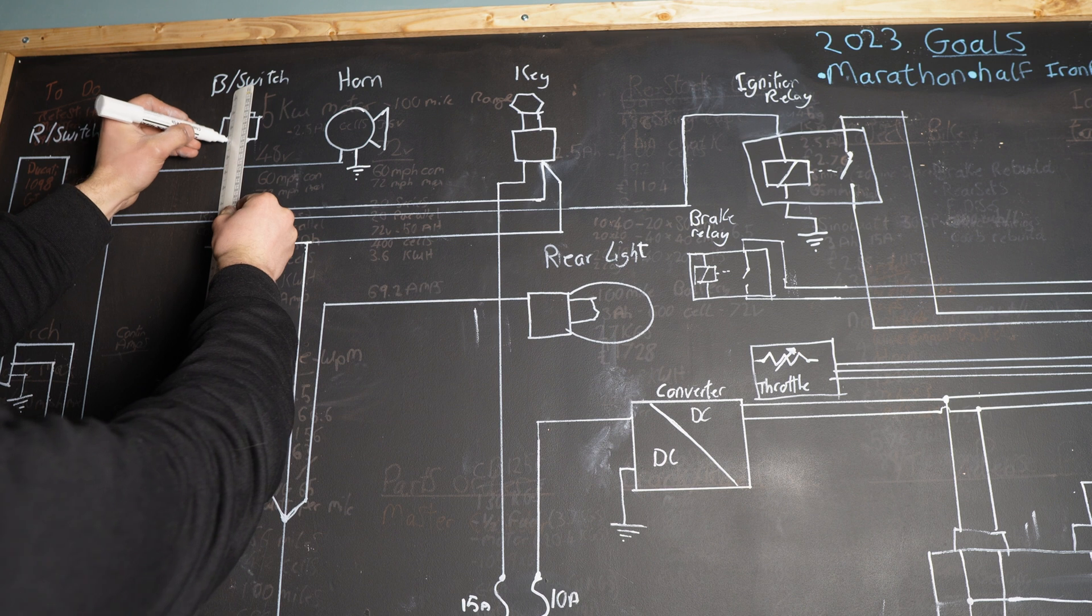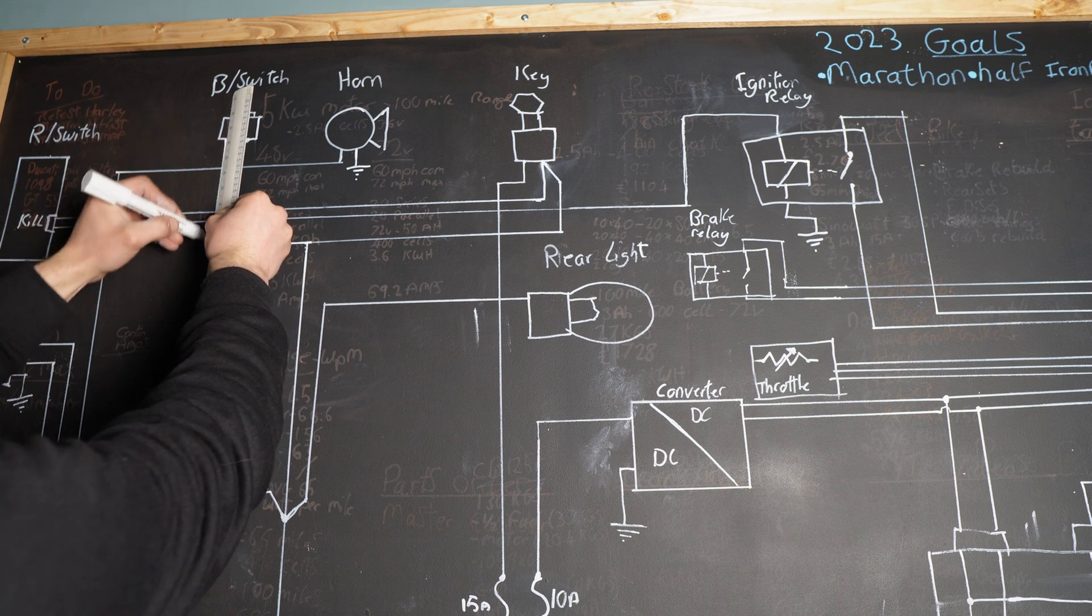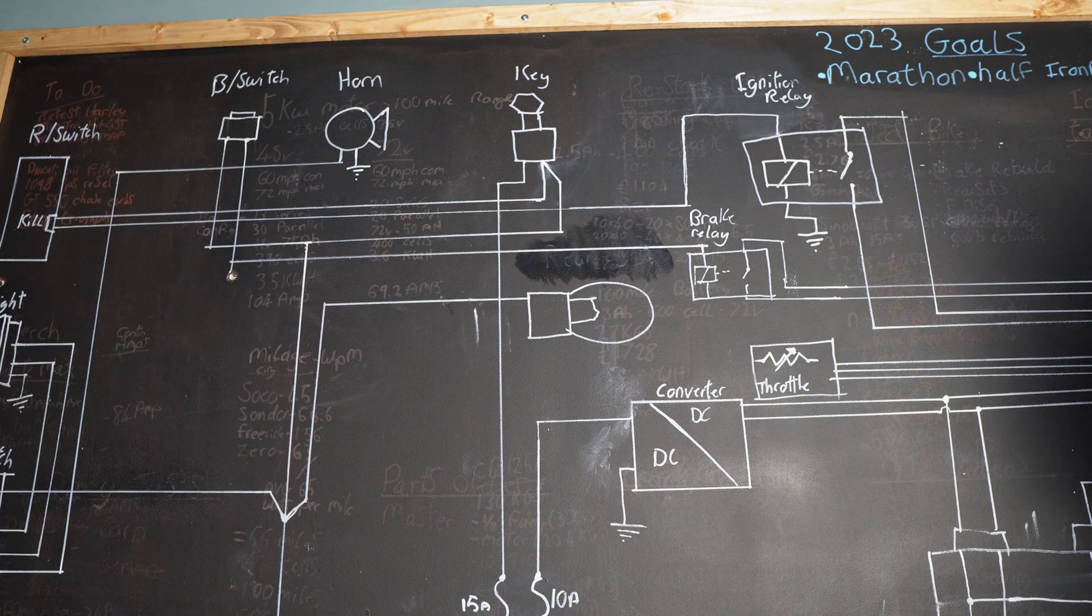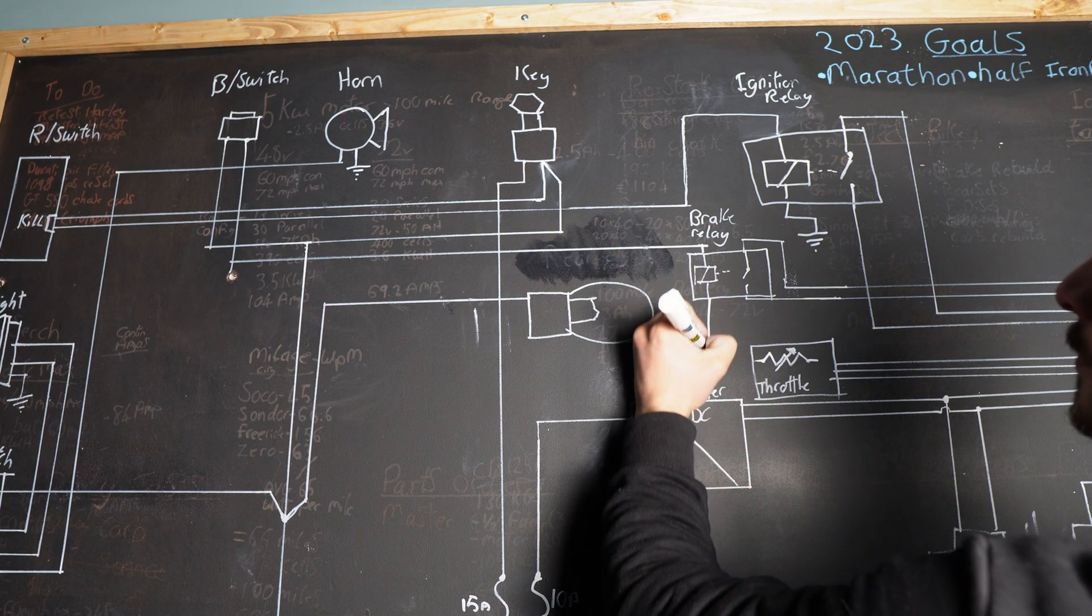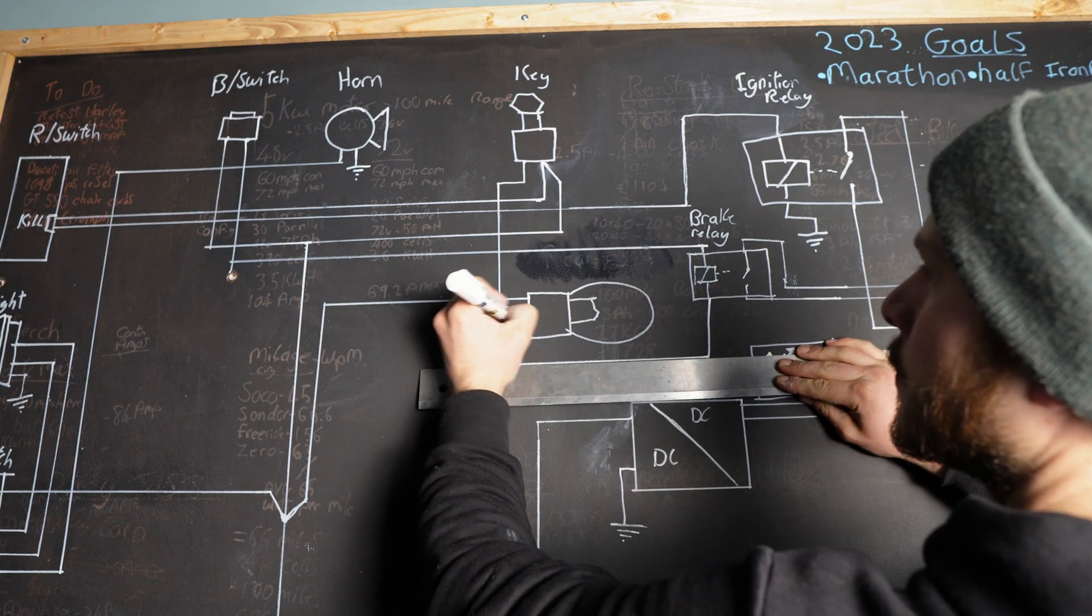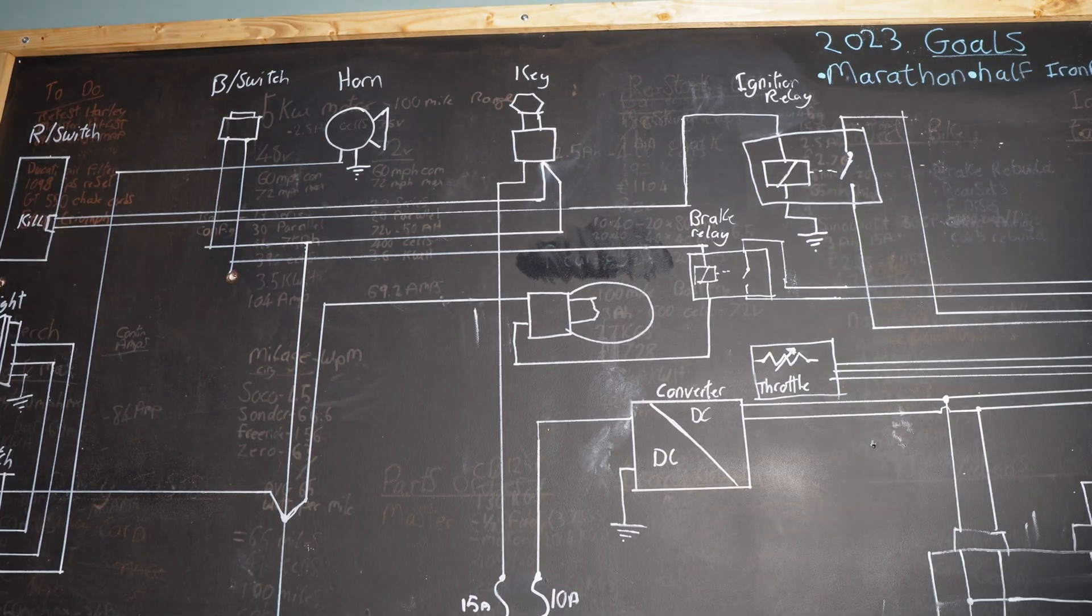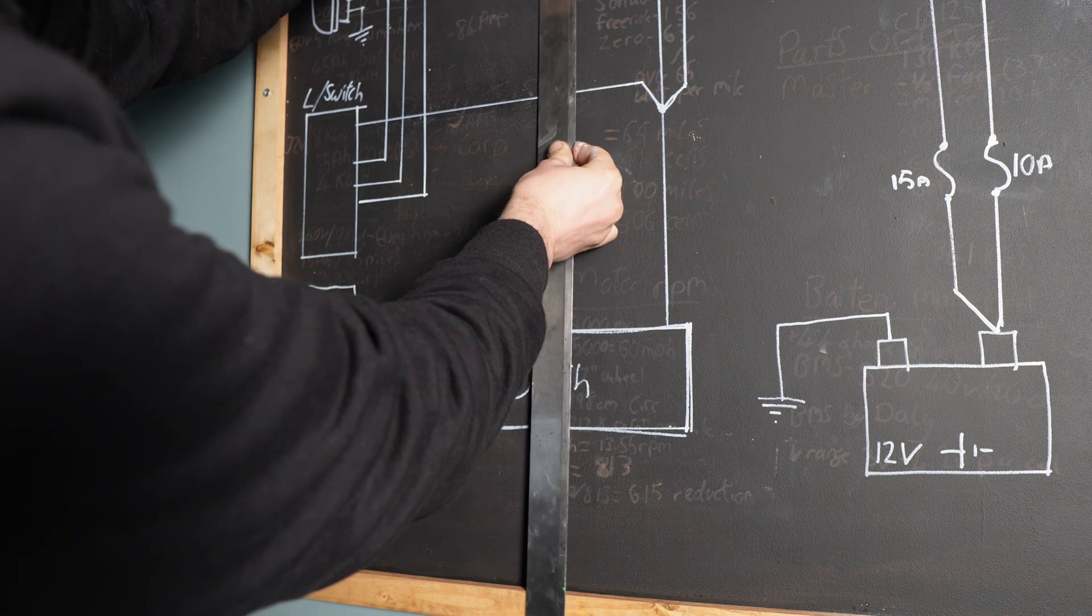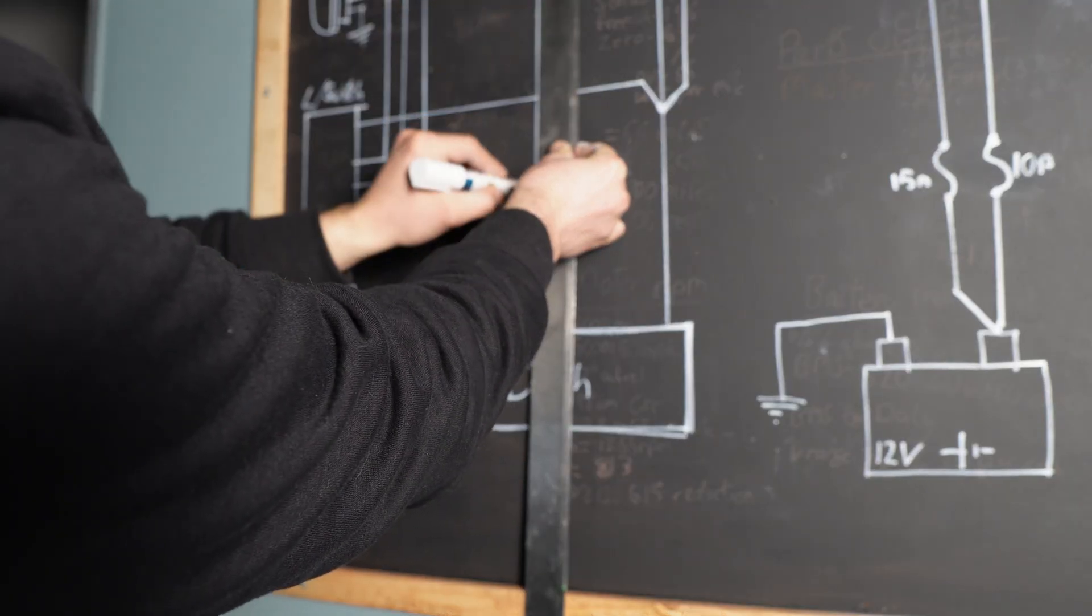The brake light switch is constantly fed a live. Once this is triggered when the brake is pulled the live circuit will run through the regen circuit and then onto the rear brake light. Next up is the indicators. The switch is on the left hand switch gear and this is powered via a flasher relay.